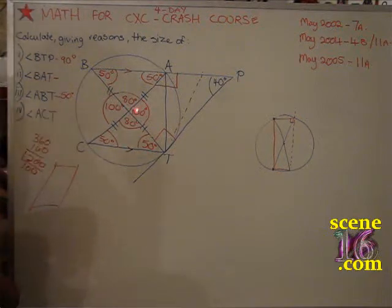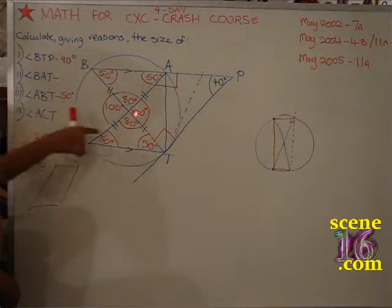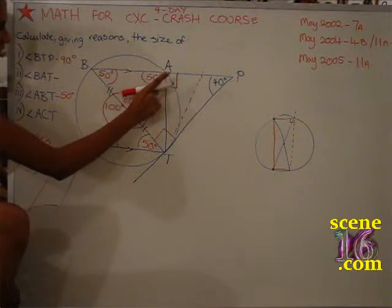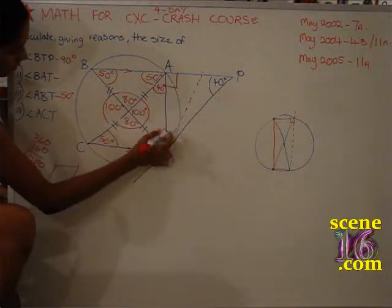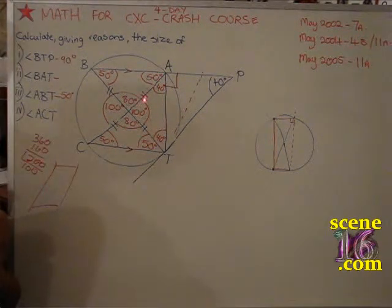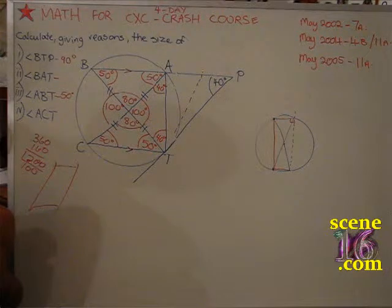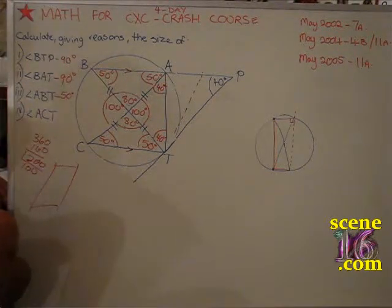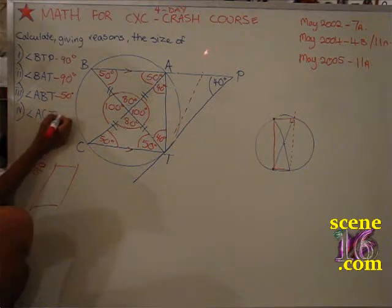We have the sum of all four being 360: 100, 200, 280, 360. If this one is 100 and these two are the same, then this angle here must be the same as this angle here — 40. And via those resolutions, we can show that angle BAT is in fact 90 degrees. So BAT is 90, ABT is 50, and ACT is also 50.